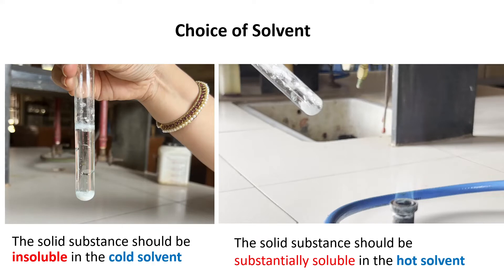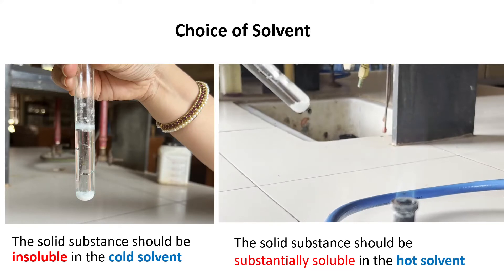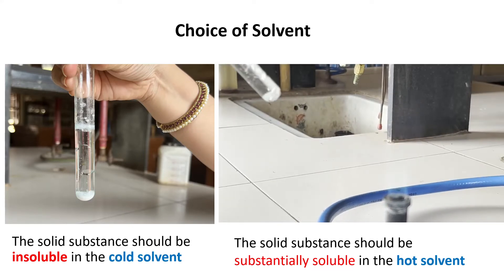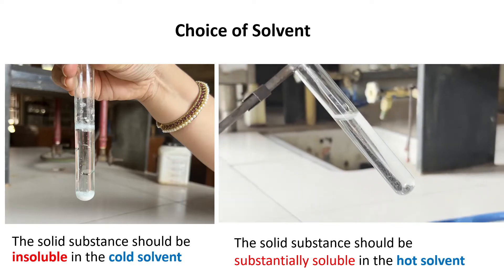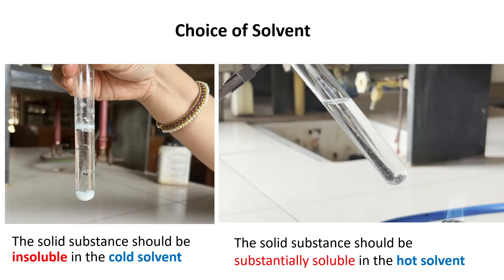The condition for the solvent to be used for recrystallization is that the substance we want to purify must be insoluble in that solvent under cold conditions, but should be soluble under hot conditions. Here I have taken a substance to be purified in a test tube and added half a test tube of water. You can see that the substance is insoluble under cold conditions. Now I will start boiling this solution, and you can see that the substance gets dissolved. This means I can use water as a solvent for purification of this particular organic compound. Generally used solvents for purification are water, aqueous alcohol, or alcohol.